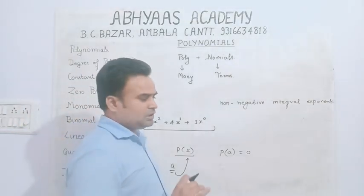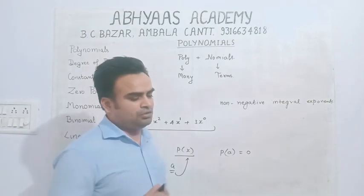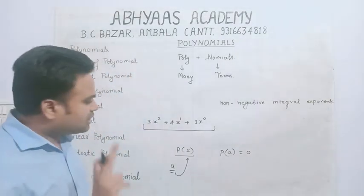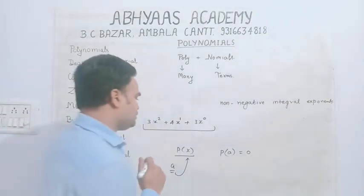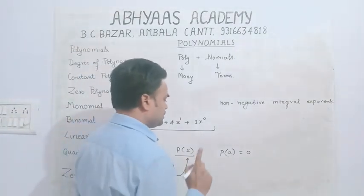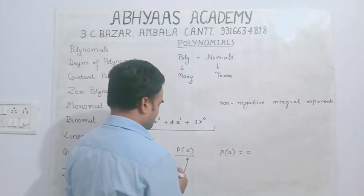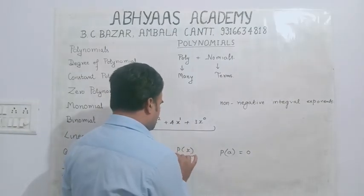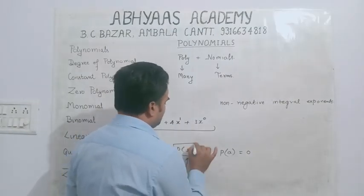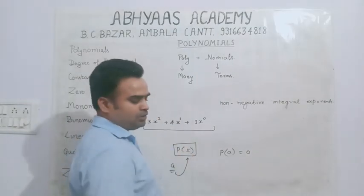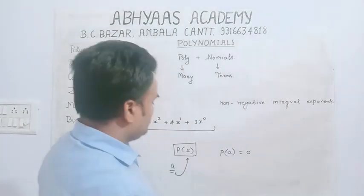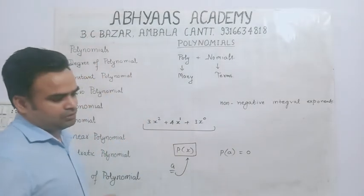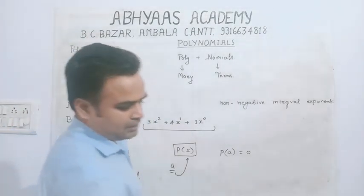जितने भी linear polynomials होते हैं, उनका केवल single zero निकलता है — मतलब single value ही आती है। If we talk about linear polynomial, it will have one zero.